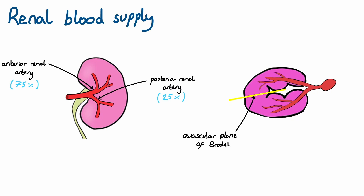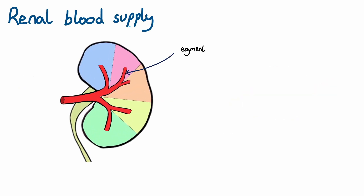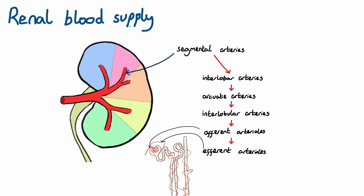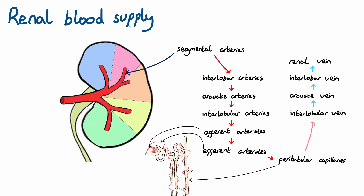Each artery divides into the anterior branch, carrying 75% of blood, and the posterior branch, carrying 25%. After dividing, the blood vessels subdivide further into segmental arteries — five per renal artery, each supplying a different segment of the kidney. Each segmental artery further divides into interlobar arteries situated either side of the renal pyramid, then arcuate arteries, then interlobular arteries, followed by afferent and efferent arterioles in the renal corpuscle. These form peritubular capillaries for excretion and reabsorption of waste and nutrients. Blood is drained from the kidney via the respective veins to the inferior vena cava. Note that there is considerable anatomical variation in renal blood supply between individuals; for example, some may have multiple renal arteries.